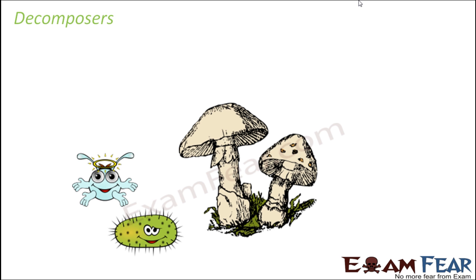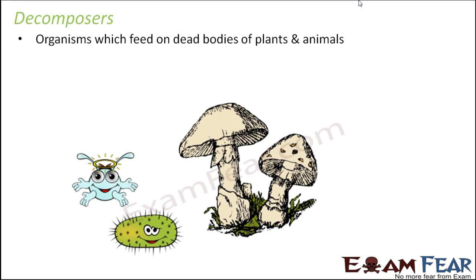What are decomposers? These are organisms which feed on dead bodies of plants and animals. Inside a forest we have two categories of organisms based on how they obtain their food: first, autotrophs, which can prepare their own food like green plants; and second, heterotrophs. These organisms which feed on dead plants and animals are also dependent on other organisms, so they fall under the category of heterotrophs. They are also termed as saprotrophs. The word 'sapro' means dead and decaying, so since they eat decaying matter, they are called saprotrophs. Saprotrophs also fall in the category of heterotrophs.